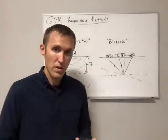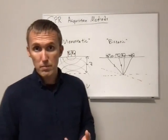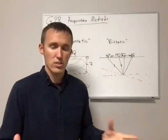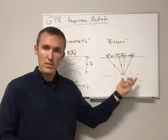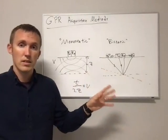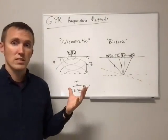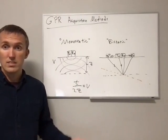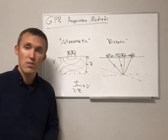So we've got these three methods: WAR — Wide Angle Reflection and Refraction — Common Midpoint Acquisition, and Reflection Profiling by moving the transmitting and receiving antennas along. Those are all bi-static system data acquisition modes. With a monostatic system, we basically only have reflection profiling where the distance between transmitting and receiving antenna is zero, so our offset is zero and we're just seeing straight down.